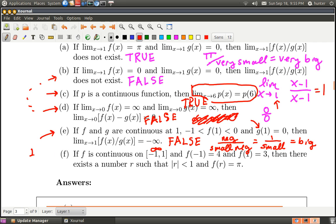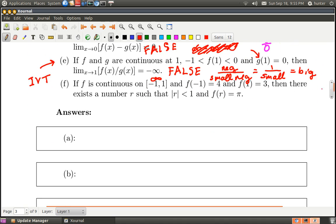What about F? F is the Intermediate Value Theorem in disguise. Remember the Intermediate Value Theorem from class. Let me draw some axes here. F is continuous on the interval from minus one to one. F of minus one is four, so let me put four here. F of one is three.